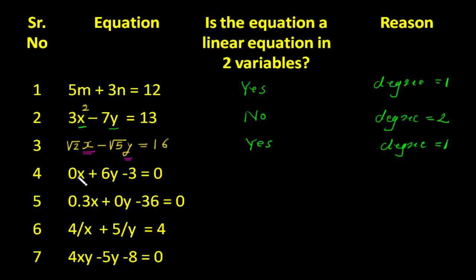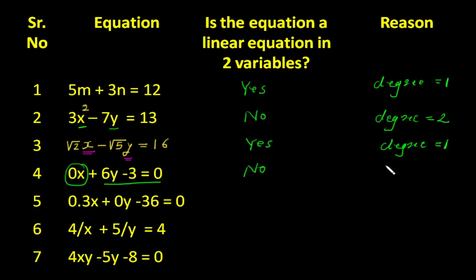Now the fourth equation: 0 times x plus 6y minus 3 is equal to 0. Here two variables are x and y, but the coefficient of x is 0, so automatically this term becomes 0 and there is no x variable remaining. It remains only an equation in one variable, and that's why this is not a linear equation in two variables. The reason is only the y variable remains.